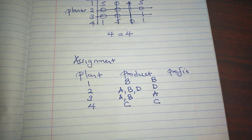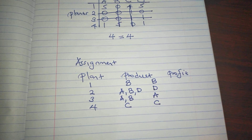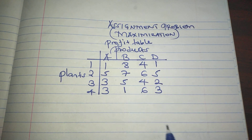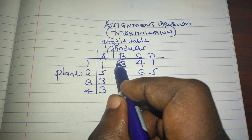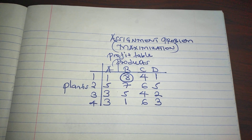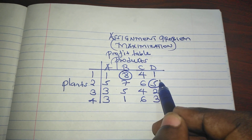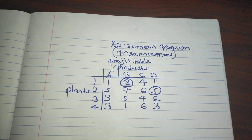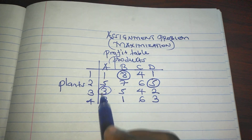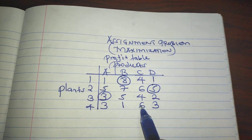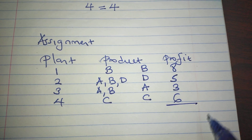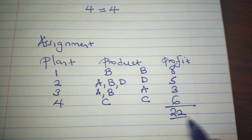Now, what is the maximum profit? We go back to our initial profit table and look up the original values for each assignment: plant one to product B, plant two to product D (value: 5), plant three to product A, and plant four to product C. Our maximum profit will be 22.